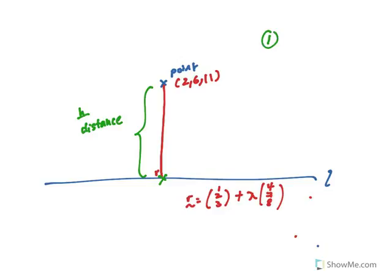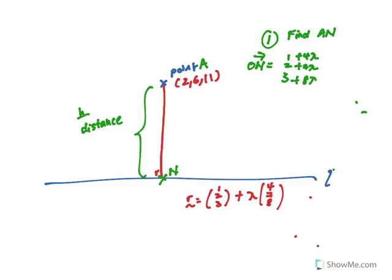Method one: let's say I call this point A and this point N. We try to find AN — that's the idea. Since N lies on the line, we can express ON in the form (1+4λ, 2+7λ, 3+8λ).